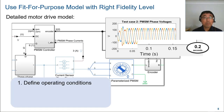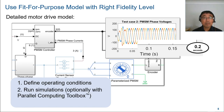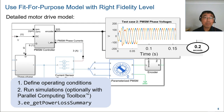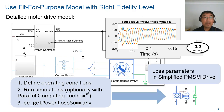With this short simulation, this model can estimate the electrical losses of the motor drive system as follows. First, we define speed and torque as operating conditions. Second, we run simulations on these operating conditions. Because these simulations are independent, the Parallel Computing Toolbox can shorten the overall simulation time. Finally, we can get the electrical losses information from the results using the Get Power Loss Summary API in Simscape Electrical.